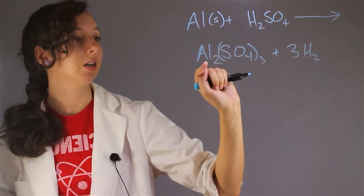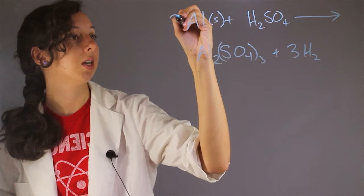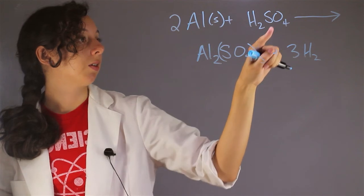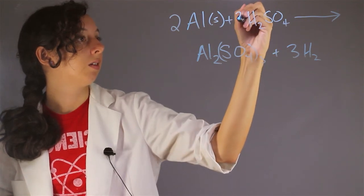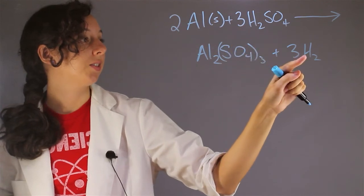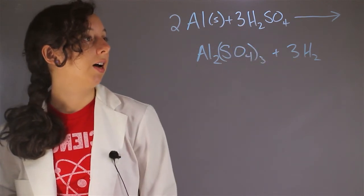Well, we have two aluminums here, so we're going to have to add two here, and then we have three sulfates here, and so we're going to have to add three here, and we can see our hydrogen gas is already balanced.